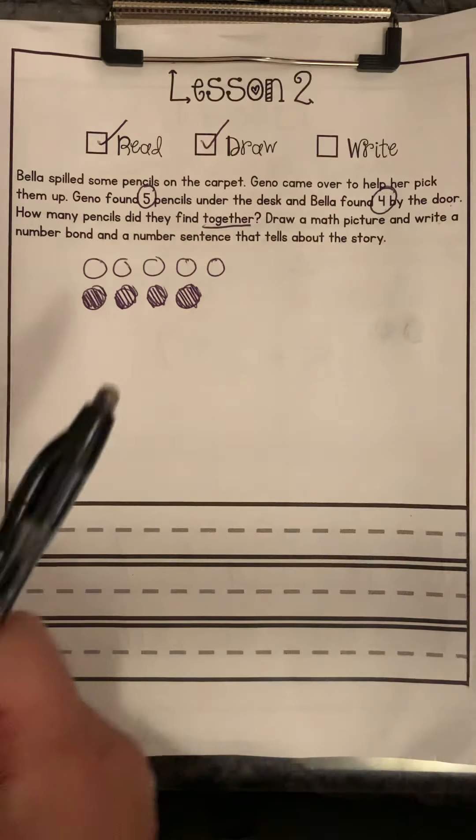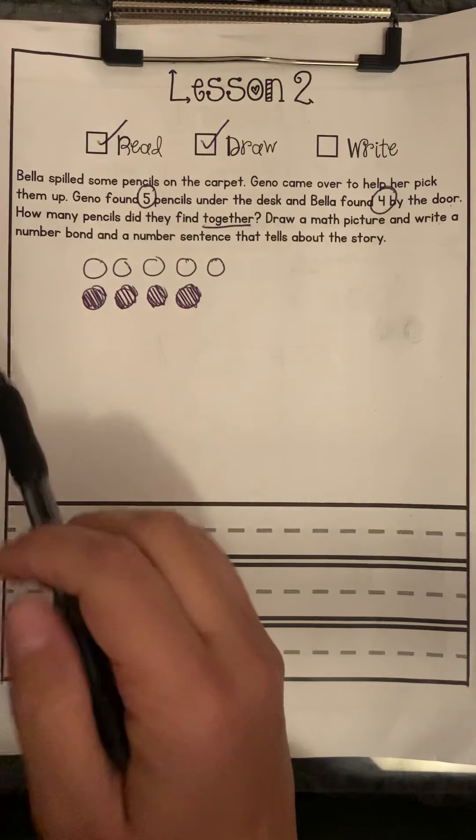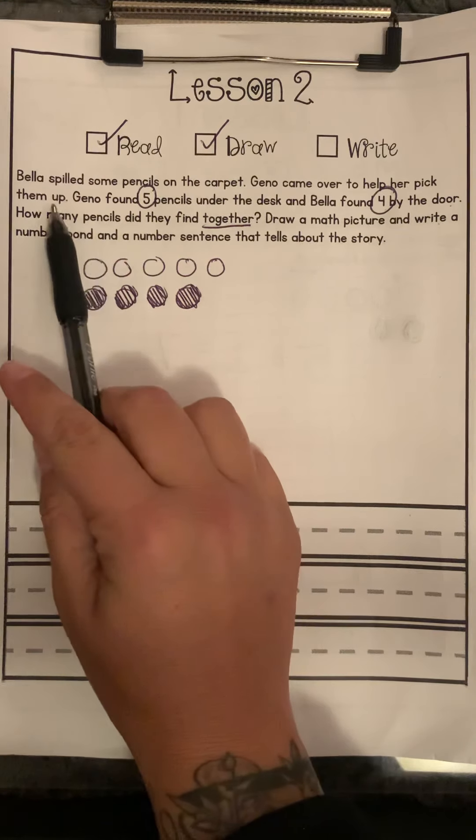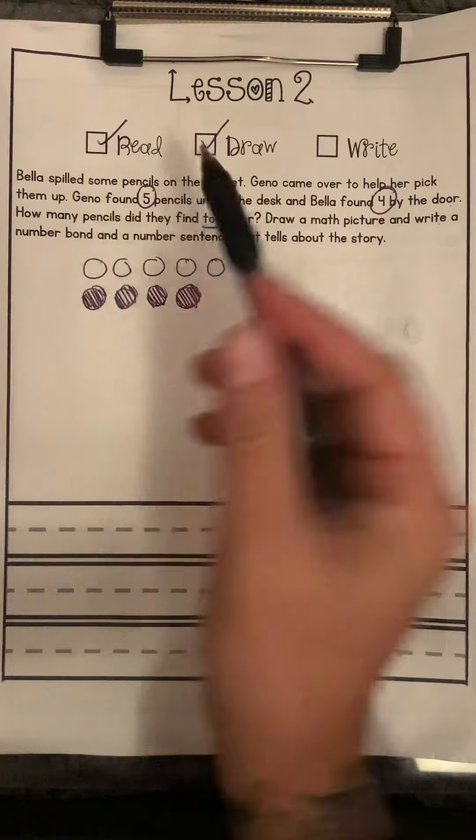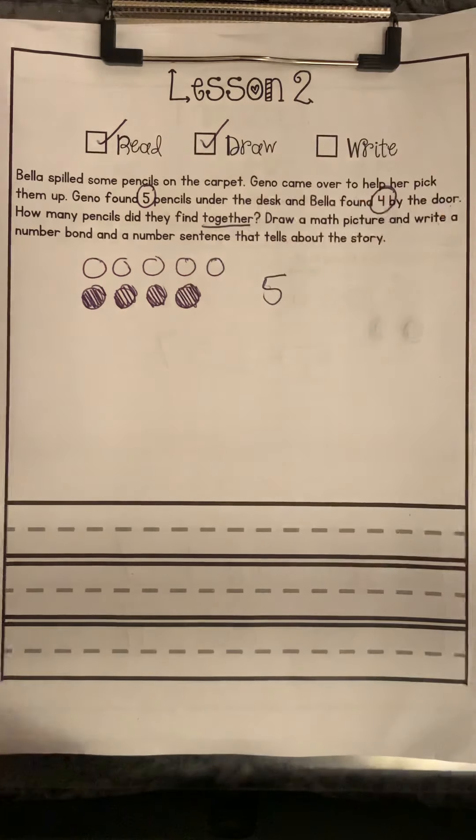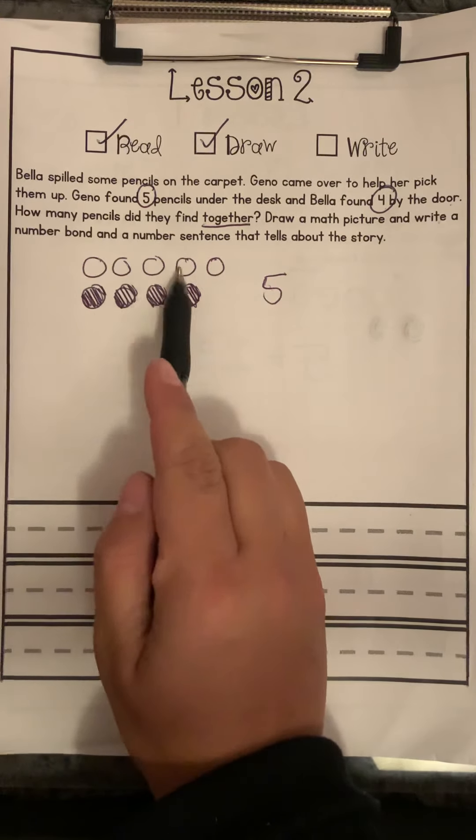So I read, I drew a picture, and let's write our number sentence. So when they were picking up the pencils, Gino found five. One, two, three, four, five.